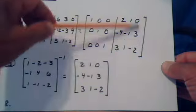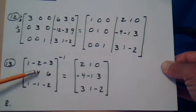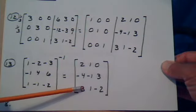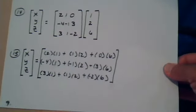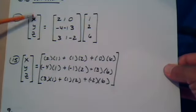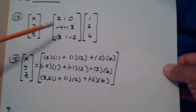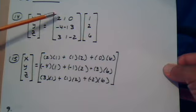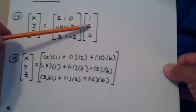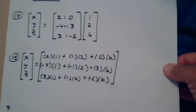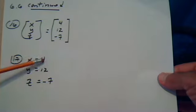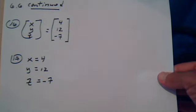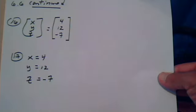The right side is now the inverse we were looking for. Now we go back to our original equation to solve for the x matrix — even though it says x, y, and z, it's called the variable matrix. We insert the inverse we found, then multiply this matrix by this matrix. After simplifying the multiplication, we get our result: x equals 4, y equals 12, and z equals negative 7. This is the solution to our matrix equation.